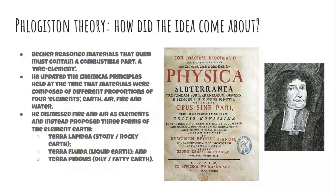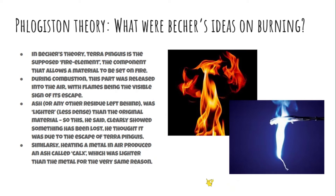Becher reasoned that materials that burn must contain some combustible part, which he termed a fire element. He updated the chemical principles of his time, which held that materials were composed of four elements: earth, air, fire, and water. For combustion, he dismissed fire and air and instead proposed three forms of the element earth: terra lapidea (stony or rocky earth), terra fluida (liquid earth), and terra pinguis (oily or fatty earth). In Becher's theory, terra pinguis was the fire element — the component that allows a material to be set on fire.